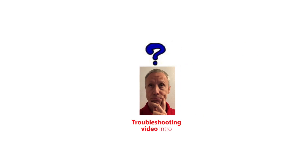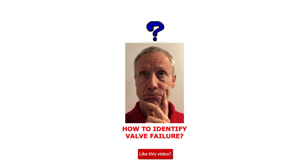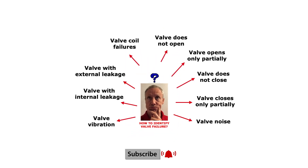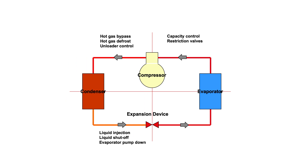This video gives you troubleshooting tips related to how to identify possible solenoid valve failures in a refrigeration system depending on valve location and valve function. How do we efficiently identify possible solenoid valve failures? Here you see the potential solenoid valve failures which might happen in the refrigeration system: valve noise and vibration, valve does not open or opens only partially, valve does not close or closes only partially, valve internal or external leakage, and valve coil failures. These valve failures might affect the refrigeration system in different ways depending on the valve location and function in the system.